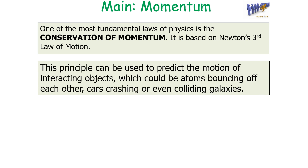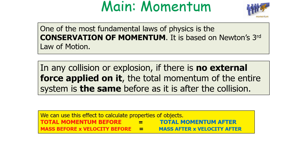This principle can be used to predict the motion of interacting objects — which could be atoms bouncing off each other, cars crashing, or even colliding galaxies. Mathematically: total momentum before equals total momentum afterwards, or mass before times velocity before equals mass after times velocity afterwards.